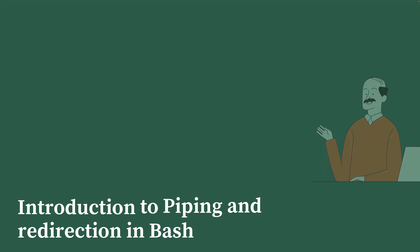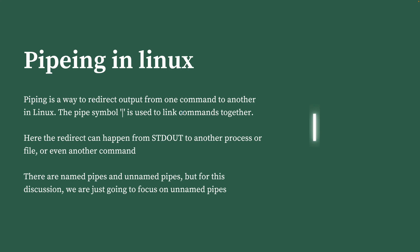Let's understand piping in a bit more detail. Piping is a way to redirect the output from one command to another in the Linux operating system. The redirection can happen from a standard input to a standard output, and the standard output can be another command, a file, or a process. One important thing to remember is that the pipe flows from left to right — it is uni-directional, not bi-directional.